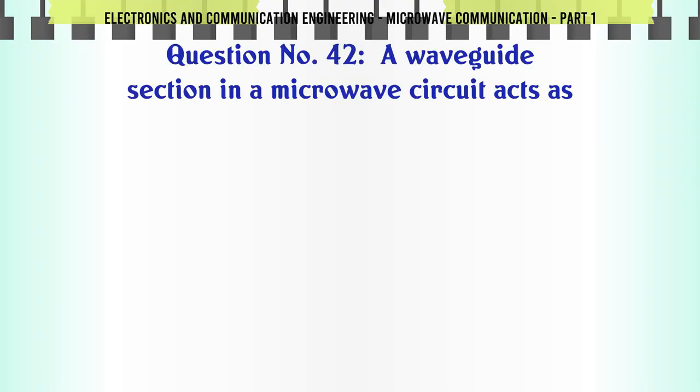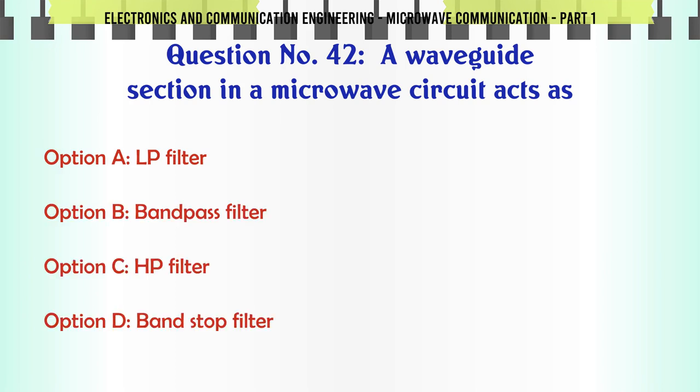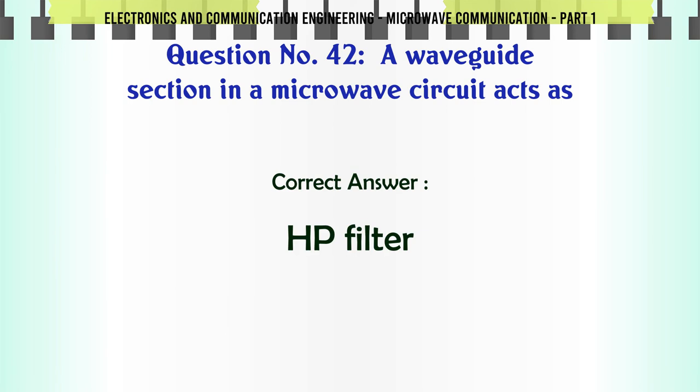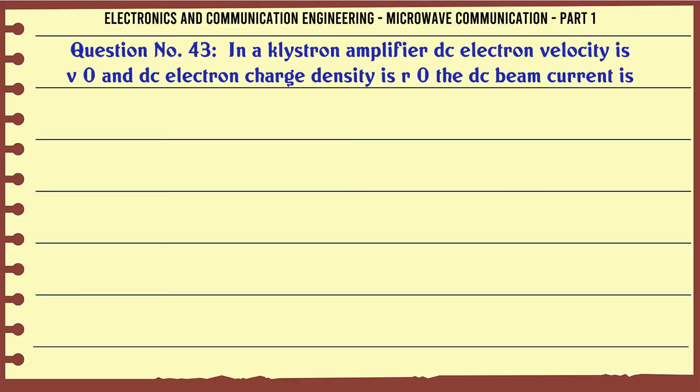A waveguide section in a microwave circuit acts as: A. LP filter, B. Band pass filter, C. HP filter, D. Band stop filter. The correct answer is HP filter.